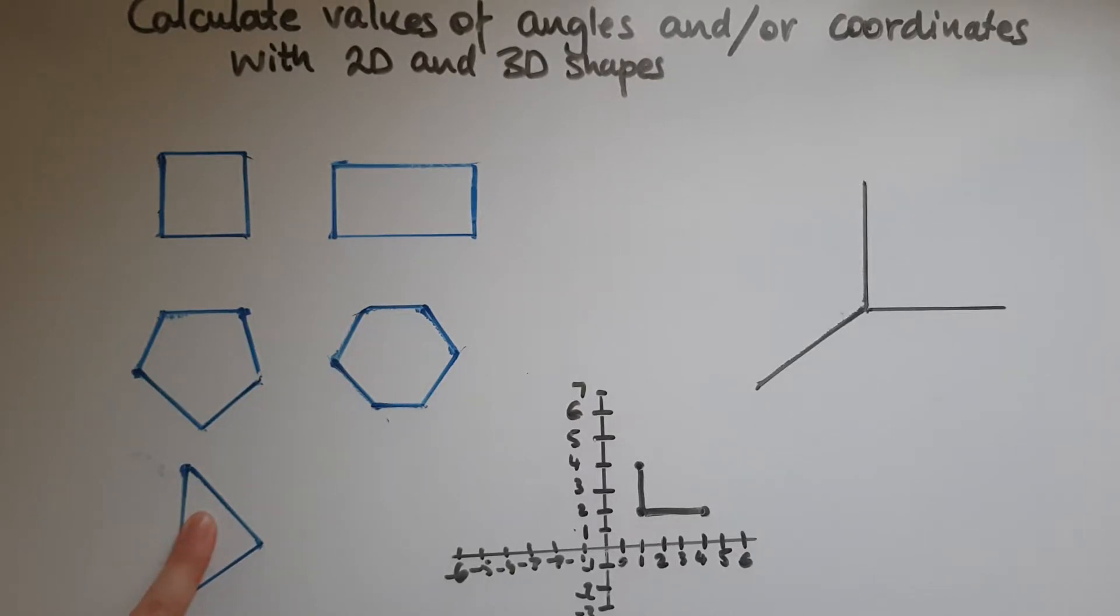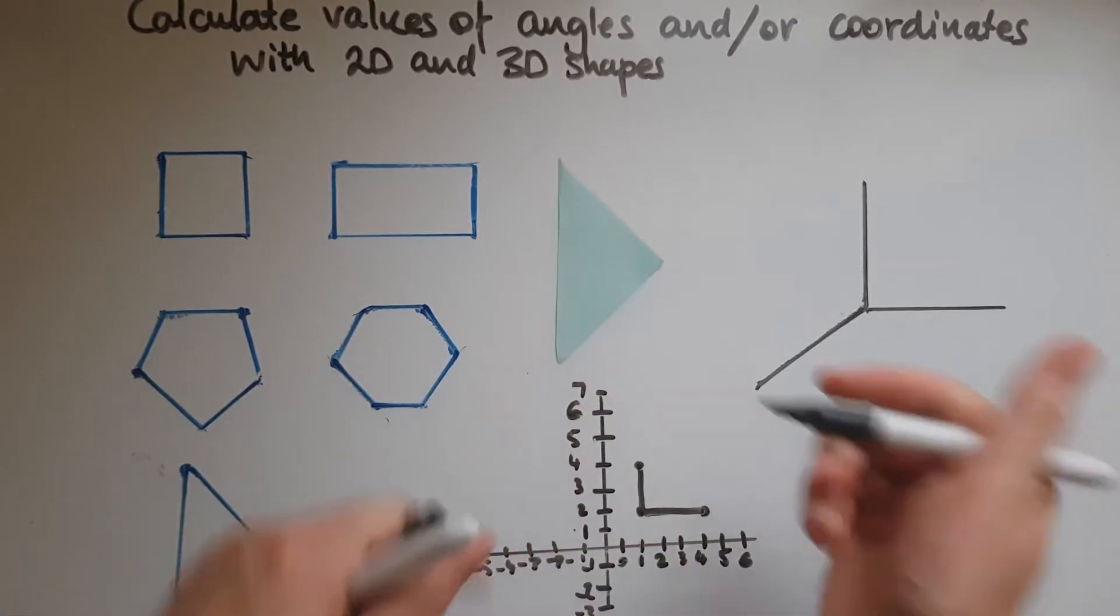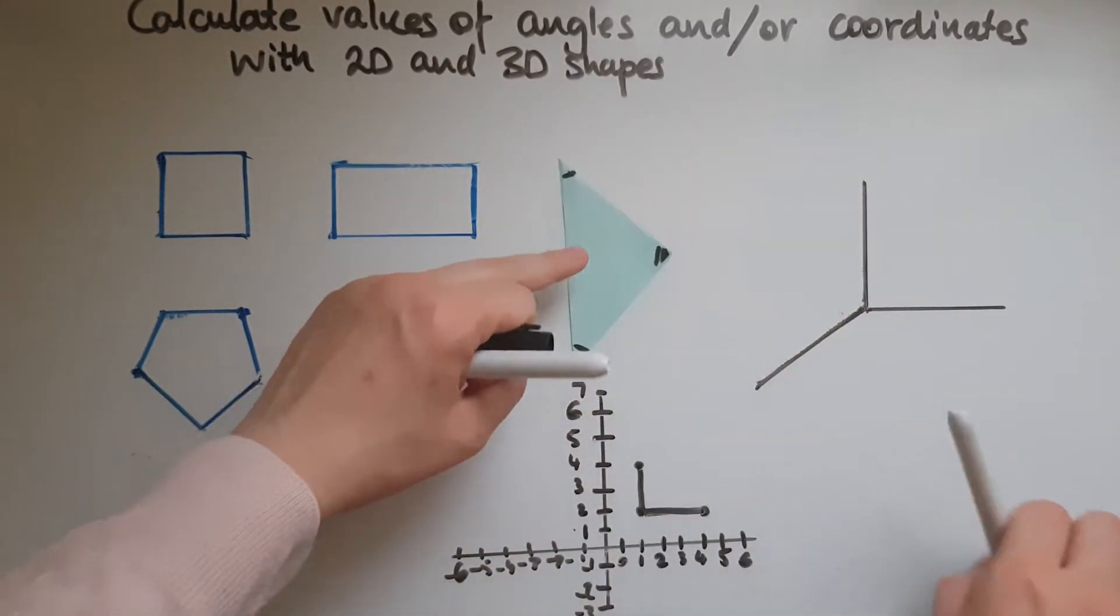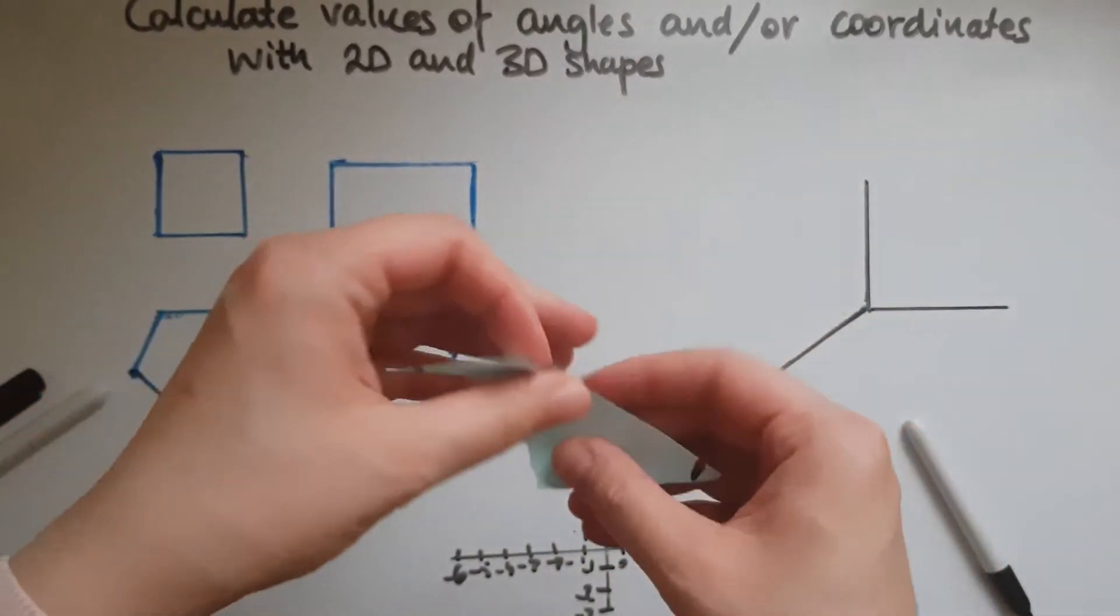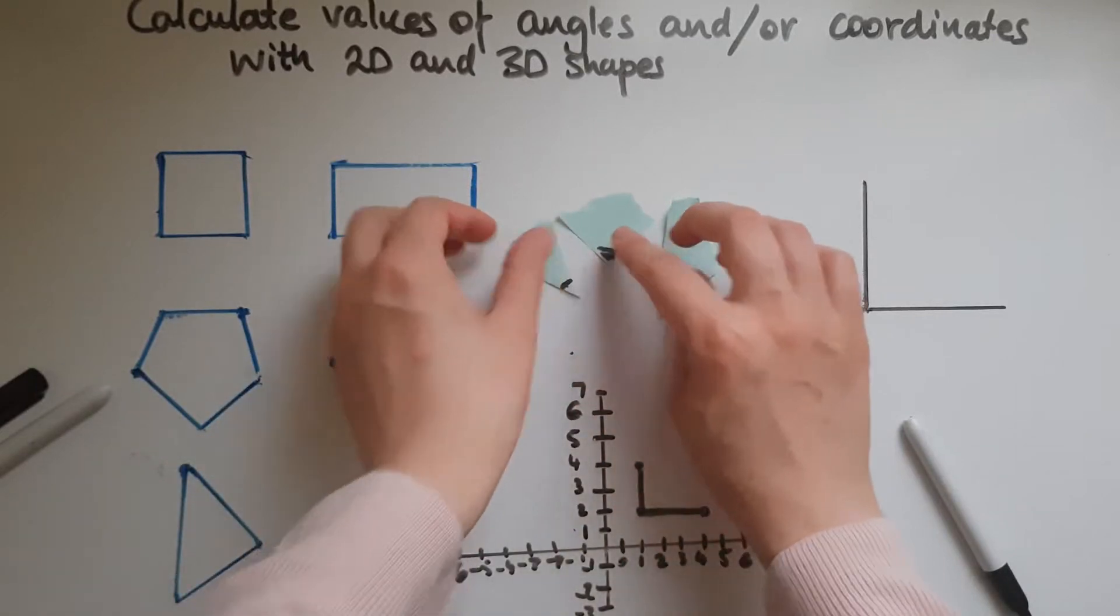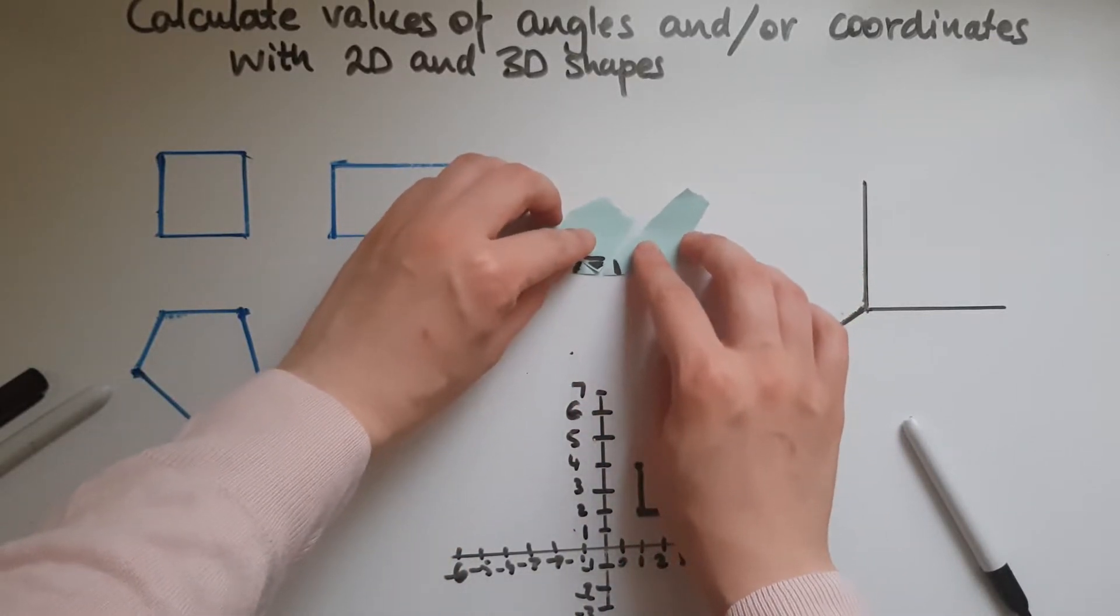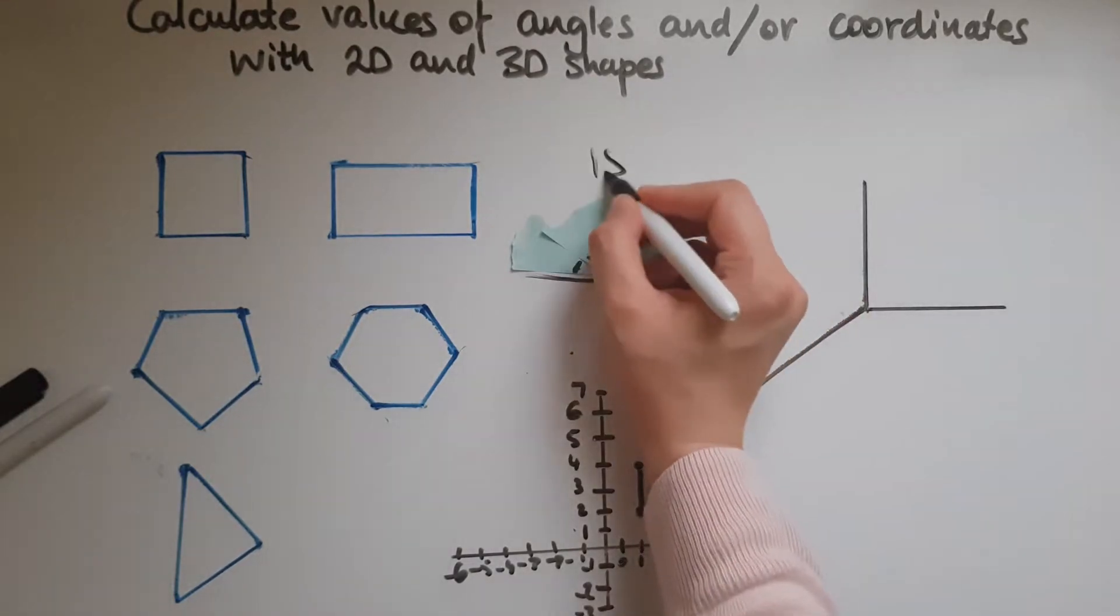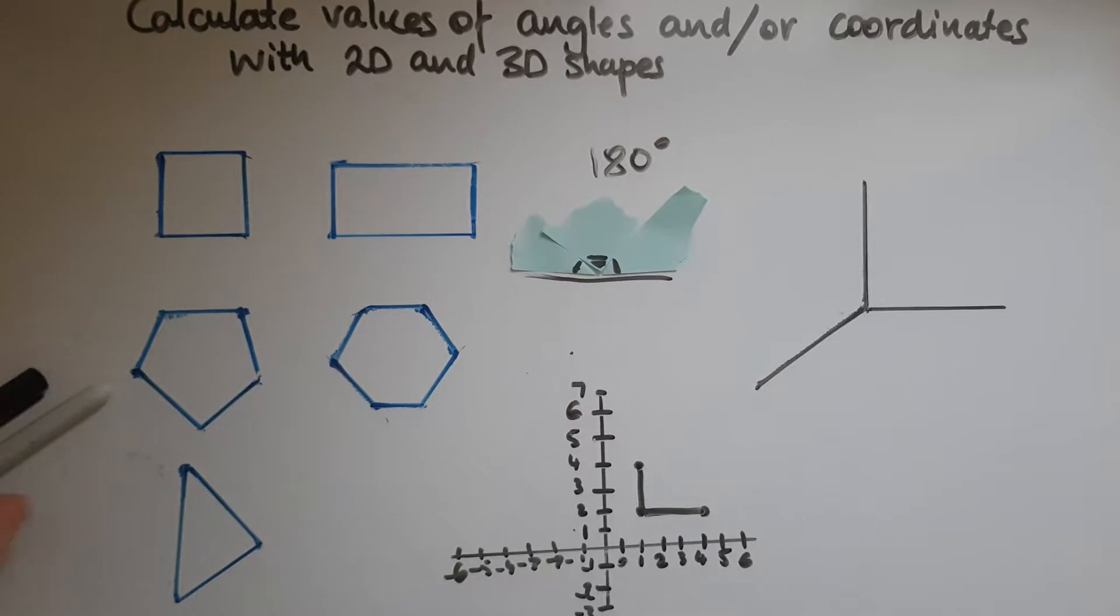So what do all the angles of a triangle add up to? And for that reason I've got a triangle here and I'm gonna mark all of its angles. And what I'm gonna do, I'm gonna tear it to bits. So I have three parts and I'm gonna put together these three angles that I marked. And as you can see it adds up to 180 which is a straight line or half of a circle. So that is a very important thing to remember, 180 degrees.